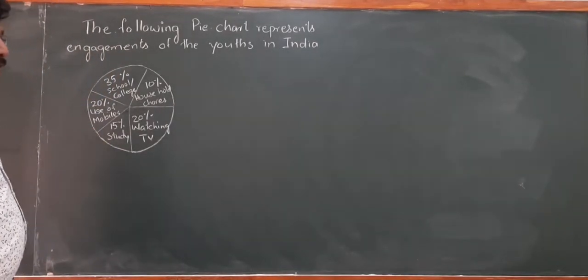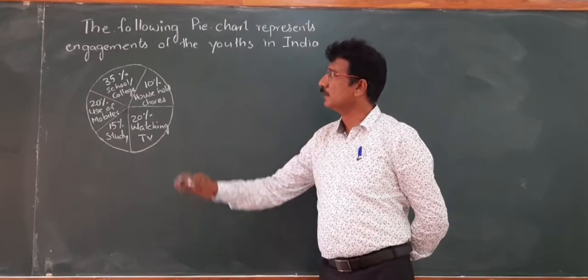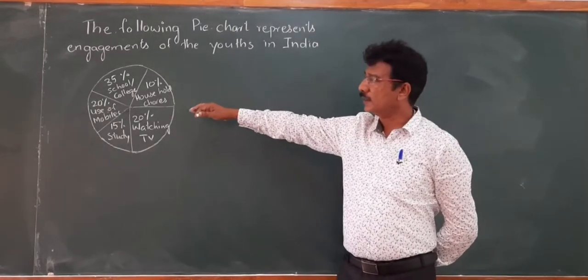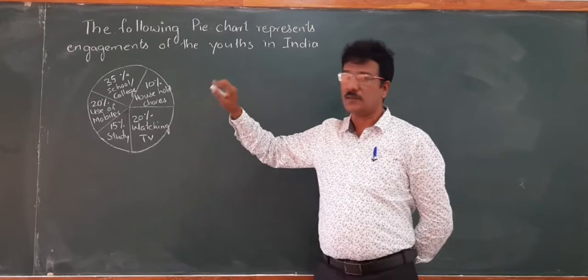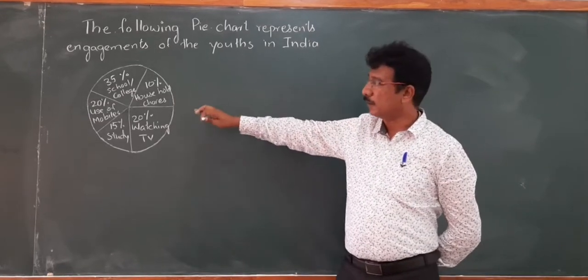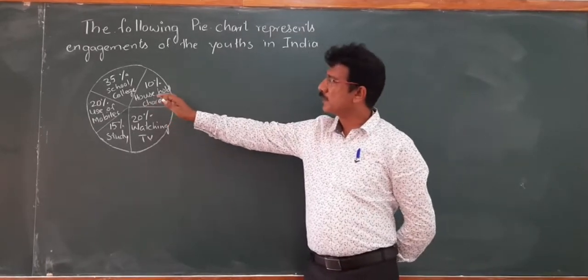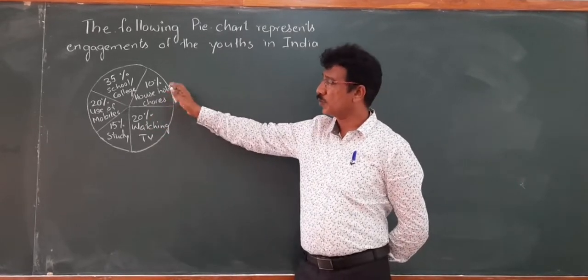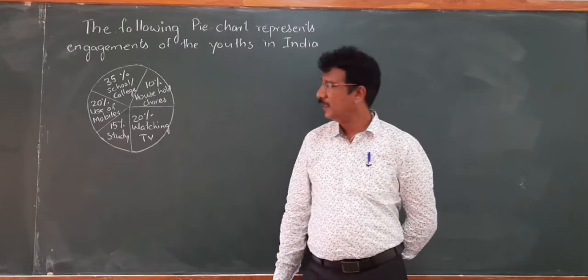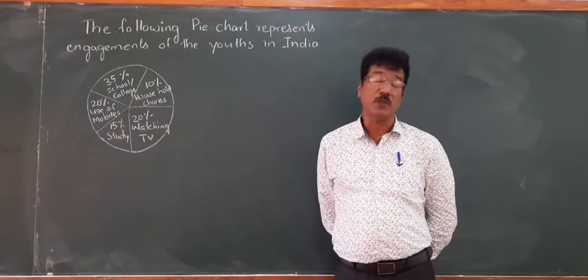Observe this chart. The following pie chart represents engagement of the youths in India. In this pie chart, you can notice that a substantial percentage of people are going to college or school, then some are involved in household work. 20% are watching TV, and 15% are studying, and the remaining 20% are using mobiles.